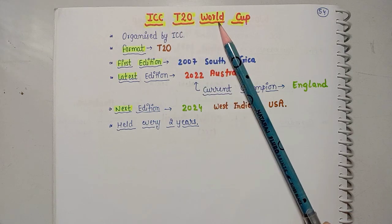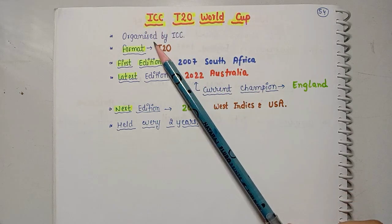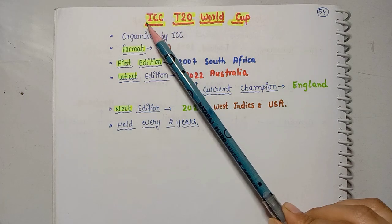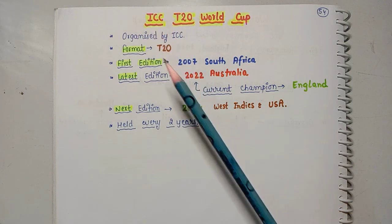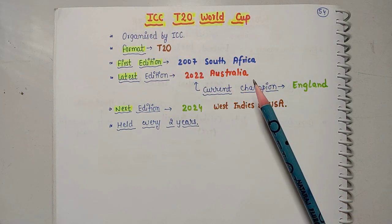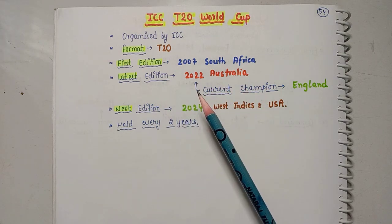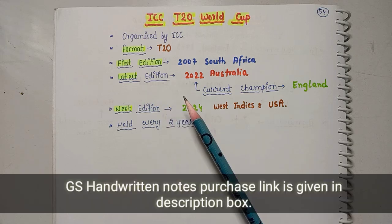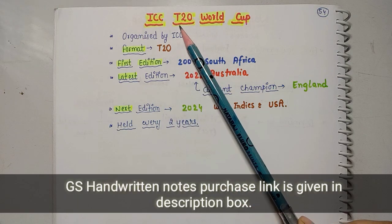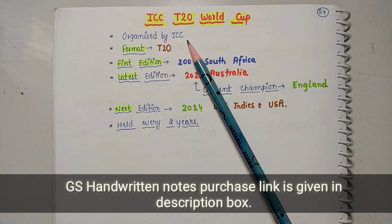What is ICC T20 World Cup? What does ICC mean? It is the International Cricket Council. In the previous video, we studied about the Women's World Cup, which is also organized by ICC. The ICC T20 World Cup is also organized by the International Cricket Council.